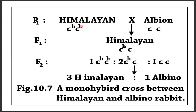Then Himalayan and albino rabbits were crossed. The F1 generation is Himalayan, showing complete dominance of the Himalayan allele over the albino allele. The F2 generation gives a ratio of 3 Himalayan to 1 albino.